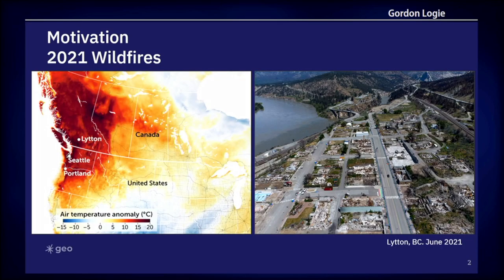Why did we do this work in the first place? In 2021, the Canadian province of British Columbia, or BC, experienced a severe heat wave, which led to the third worst wildfire season on record. The fires burned notably close to several communities and actually resulted in an entire town, Lytton, BC, burning to the ground, as shown on the right here.